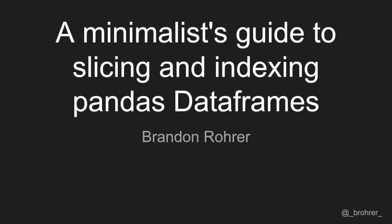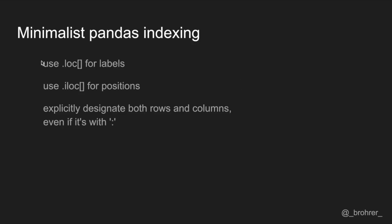Just a heads up — these are my own thoughts only. There's no guarantee that it's authoritative or even right. In case you wanted to skip to the end, here's the bottom line: one, use .loc for labels; two, use .iloc for positions; and three, explicitly designate both rows and columns, even if it's with a colon.